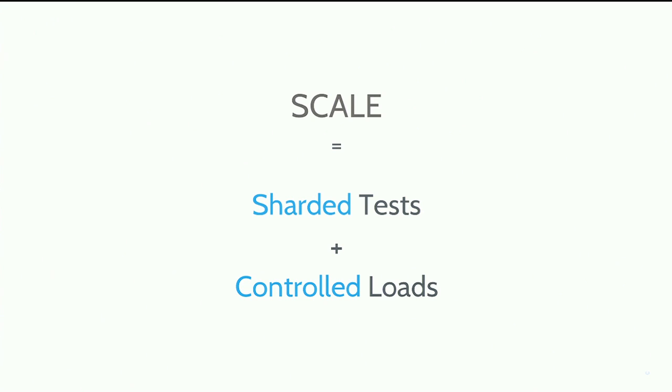That means we need tests that are fast — tests that will run on the order of minutes, like five minutes or less than ten minutes. We figured the way to get there is by scaling, and specifically I mean massive parallelism — what I'm going to call sharded tests. But you don't want to spend millions of dollars running these tests, so you want to be smart about how you use resources — that's what I'm calling controlling your workloads. I'll spend most of the time today talking about sharded tests, which is where we've done the bulk of our work.